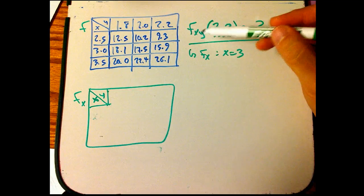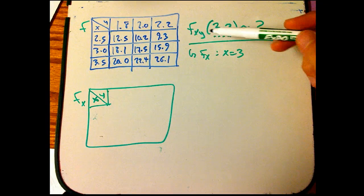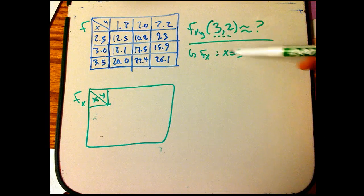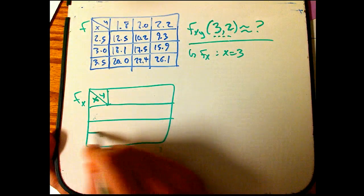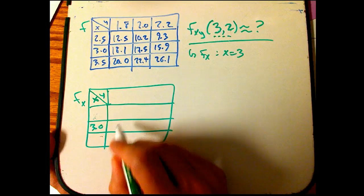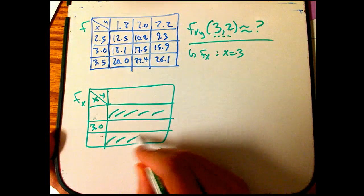Because to take the y partial derivative of something, I hold x constant. So I just need x equals 3, so I don't even really need too much of this table. I'm just going to need x equals 3. The rest of it is going to be irrelevant here.